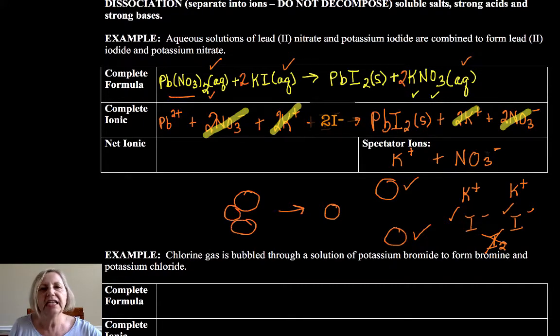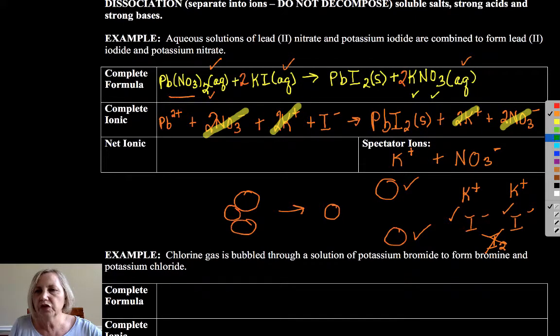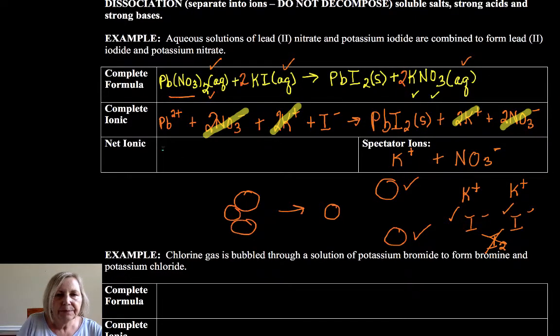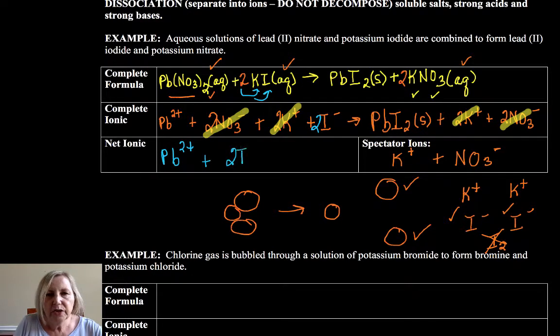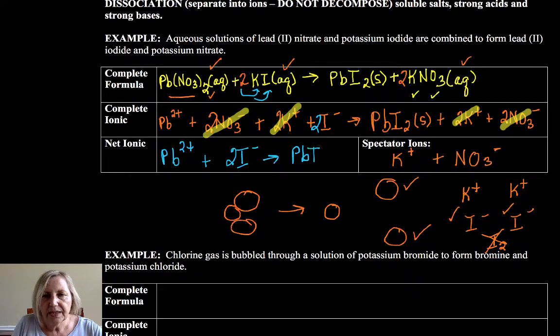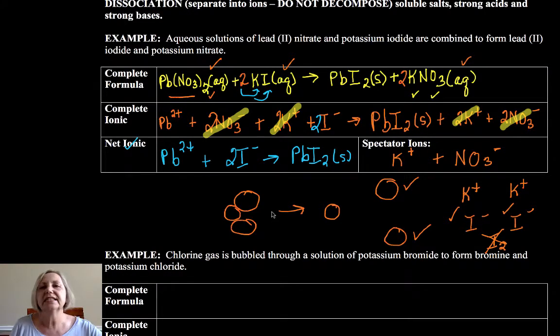They're watching the interesting chemistry. So my interesting chemistry is going to be lead ion reacting with, and I forgot my two there. The two has to go to both of those. Common error, two iodides, easy to make, especially when you're talking. And then I make my solid. This is the interesting chemistry that's happening and that's what a net ionic does.